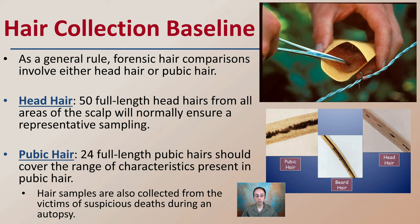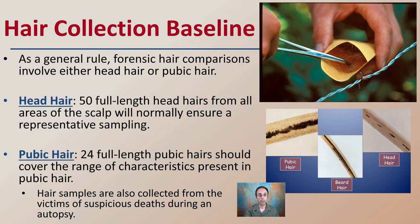Hair samples should also be collected from victims in suspicious deaths during an autopsy. If you're investigating a crime scene without a body, it may be difficult to find 50 samples, but if you have access to 50 head hair samples or 24 pubic hair samples, those are definitely advised because it helps determine the natural range of hair variability, allowing you to get closer to that individual characteristic when identifying different hair samples.